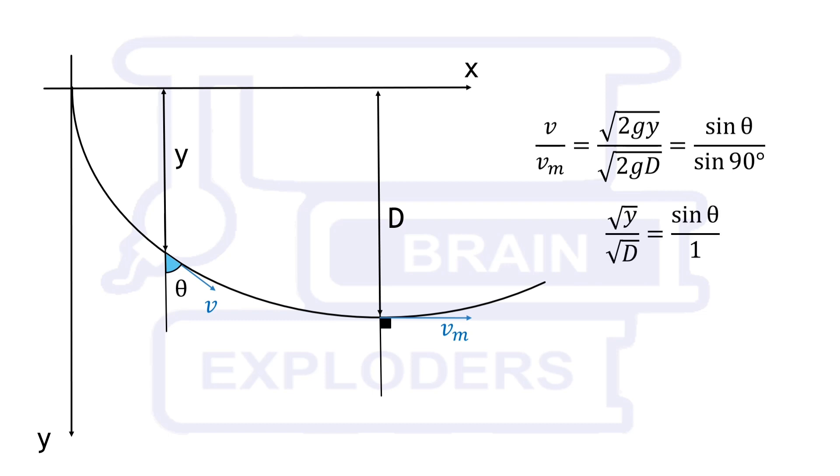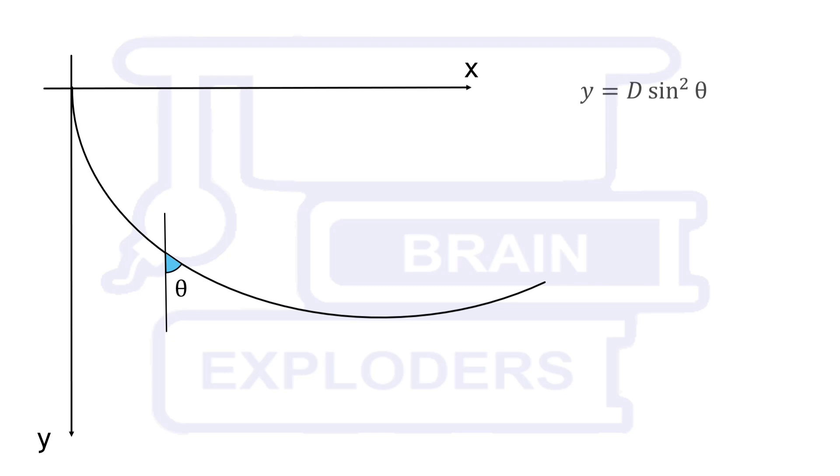From here we find that y is equal to d times sin squared theta. Sin squared theta can be written as 1 minus cosine of 2 theta over 2. We have a relation between y and theta. Now we have to find the relation between x and theta.